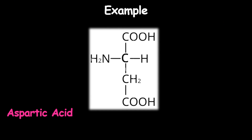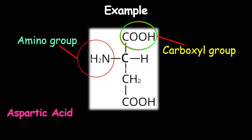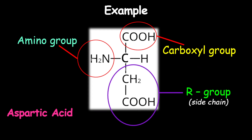Let's jump to another example. You can pause and try it on your own to see if you can identify the groups. If you look at this, you'll realize that there are two carboxyl groups — so which one is the correct one? We can only have one. Let's identify the amino group, which is on the left: NH2. The correct carboxyl group must be connected to the same carbon as the amino group, so the carboxyl group on the top is the correct one. The remaining portion at the bottom right, which connects to the same carbon, is the R group.